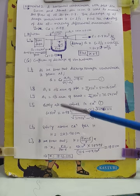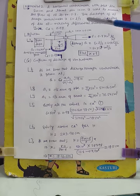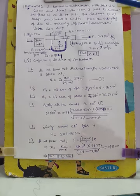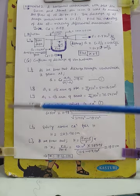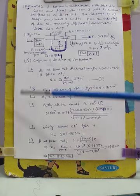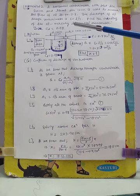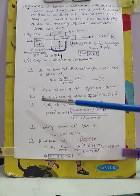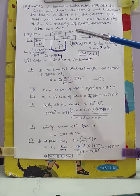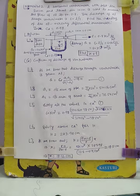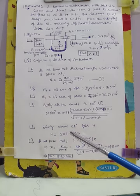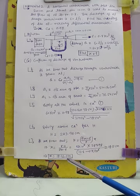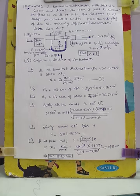In this way, we can find out any unknown quantity if we have sufficient data and follow a systematic approach. Without a systematic approach there may be confusion. We have found the manometer reading x = 18.12 centimeter. Let us now see one more problem — for a vertical venturi meter.